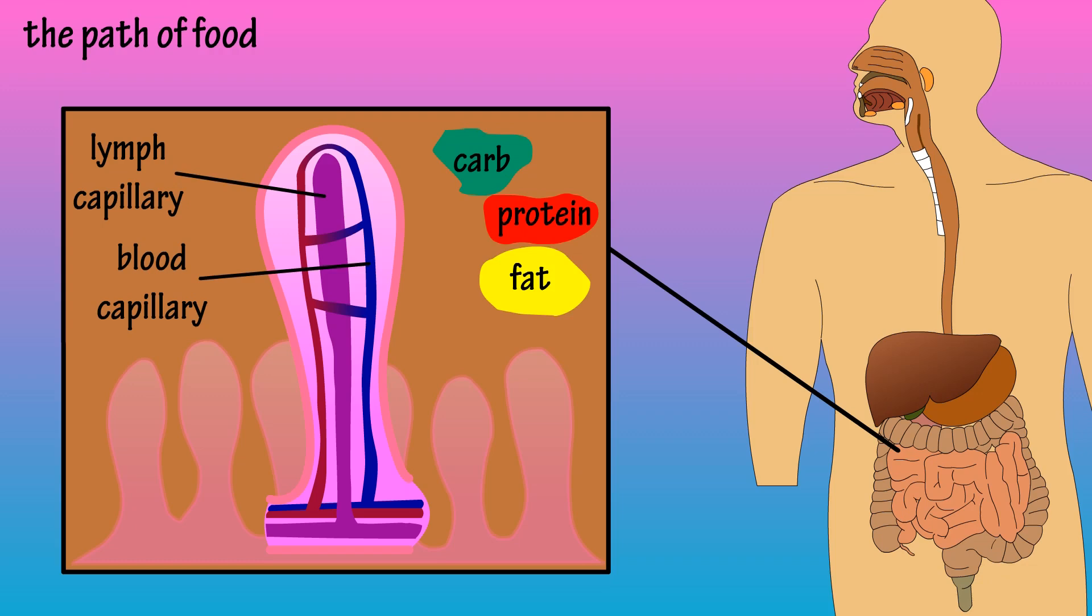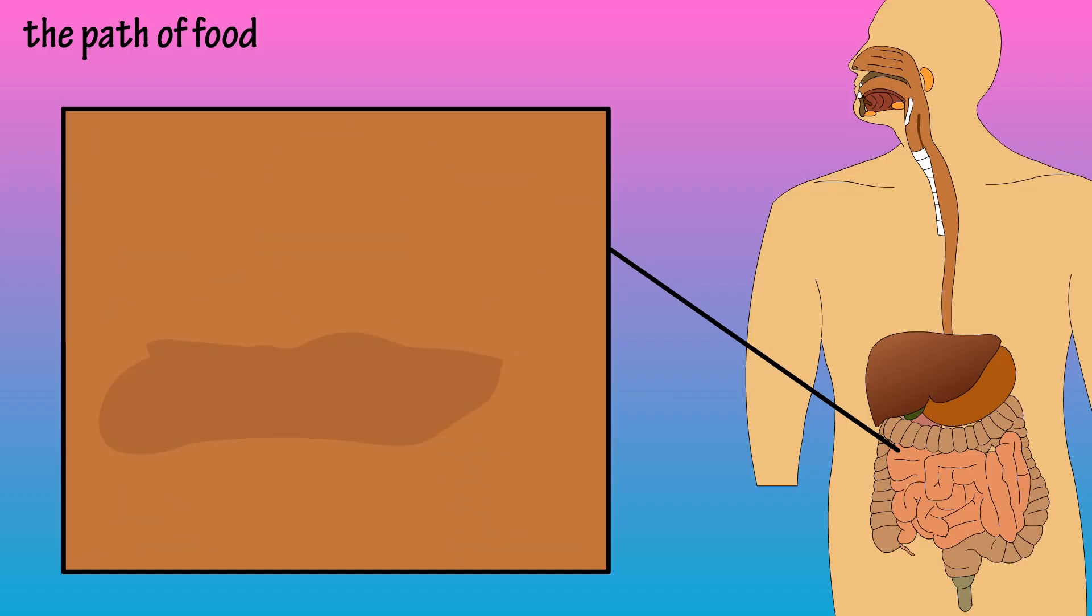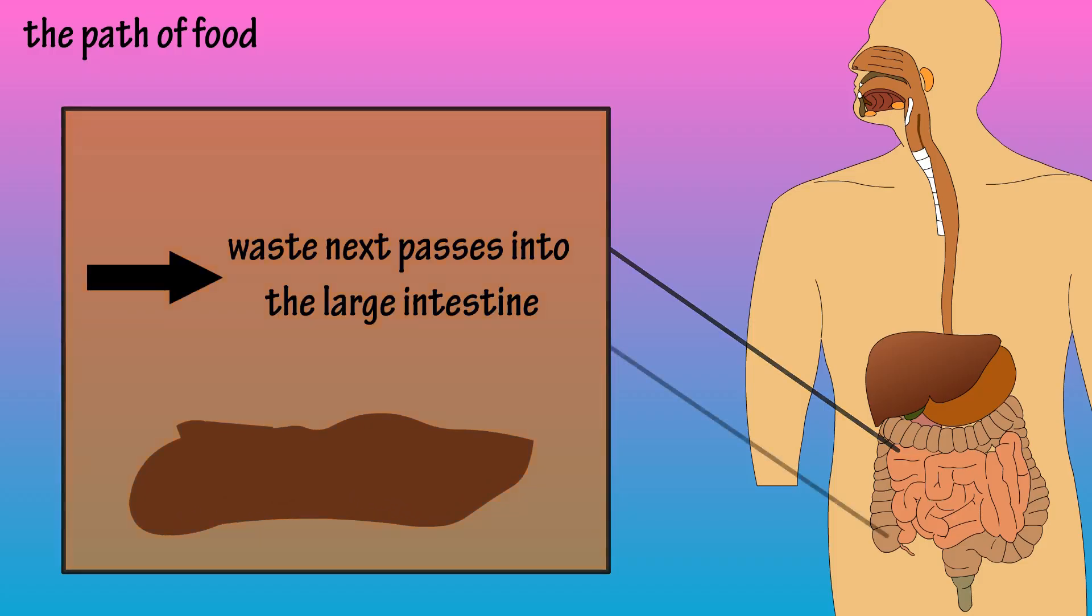Once the breakdown and absorption is complete in the small intestine, the waste product that remains from this process is partially digested, liquefied food. This passes from the last part of the small intestine, called the ileum, through the ileocecal valve, into the first part of the large intestine, called the cecum.